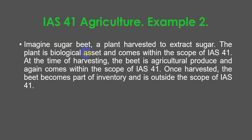Let's look at another example. Imagine sugar beet — a plant harvested to extract sugar. The plant is a biological asset and comes within the scope of IAS 41. At the time of harvesting, the beet is agricultural produce and again comes within the scope of IAS 41. Once harvested, the beet becomes part of inventory and is outside the scope of IAS 41.